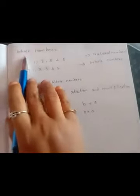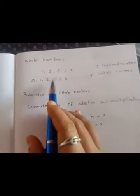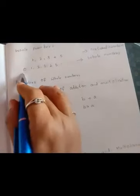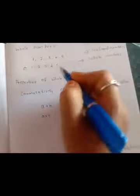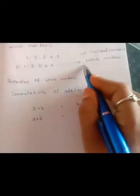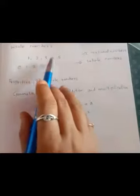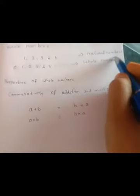Next is whole numbers and natural numbers. Whole numbers start from zero: zero, one, two, three, four, five, and so on. Natural numbers are one, two, three, four, five, and so on. Natural numbers always lie within whole numbers - whole numbers include all the natural numbers along with zero.